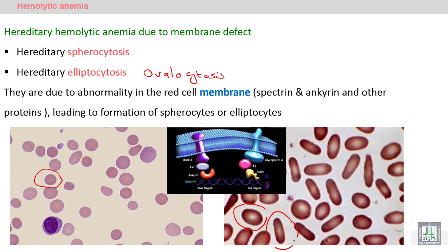It is a Membrane Defect caused by the absence of certain proteins, like Spectrin, Ankyrin, or other related proteins.